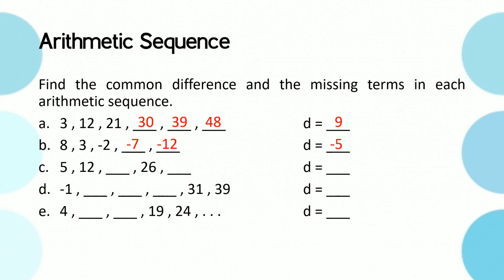For letter c, as long as there are two consecutive numbers we can always get the common difference. That's 12 minus 5 is equal to 7. Thus the missing terms are 19 and 33.